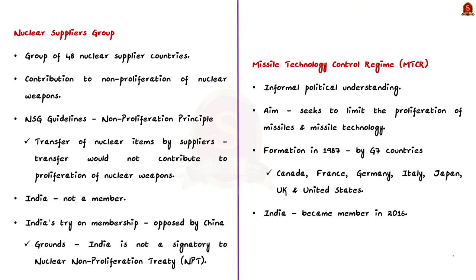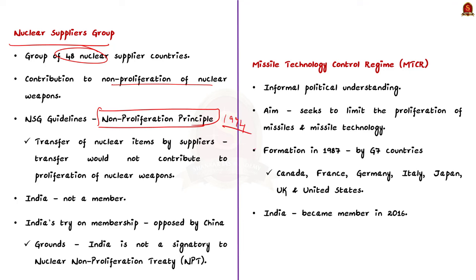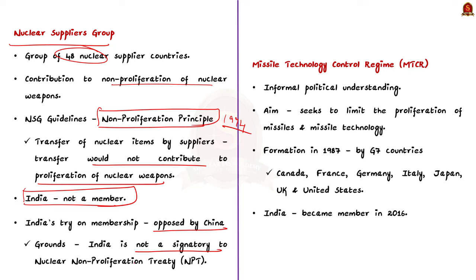The Nuclear Suppliers Group is a group of 48 nuclear supplier countries that seeks to contribute to the non-proliferation of nuclear weapons. One important NSG guideline contains the non-proliferation principle adopted in 1994, which mandates that a supplier country may transfer nuclear items only when satisfied that the transfer would not contribute to the proliferation of nuclear weapons. Note that India is not a member of NSG. India is trying to join NSG but has been continuously opposed by China on the grounds that India is not a signatory to the Nuclear Non-Proliferation Treaty.